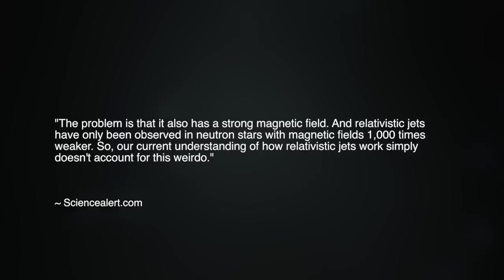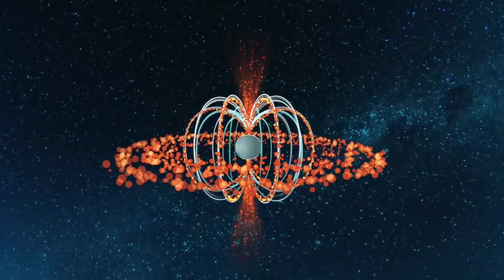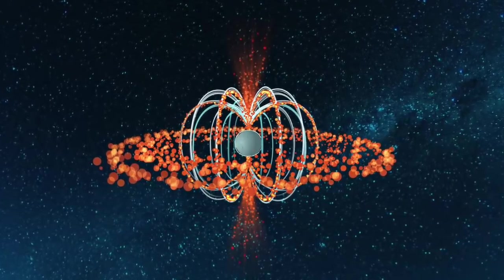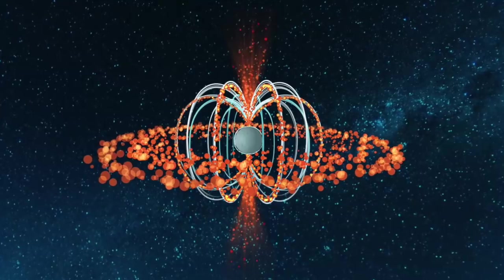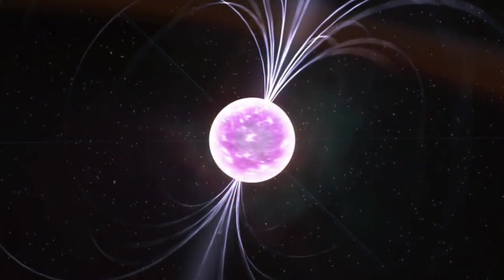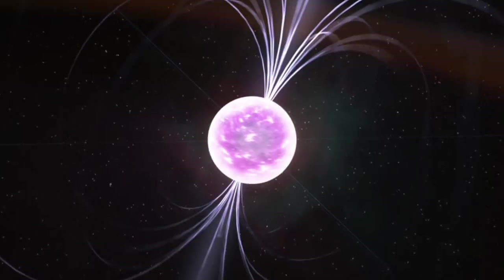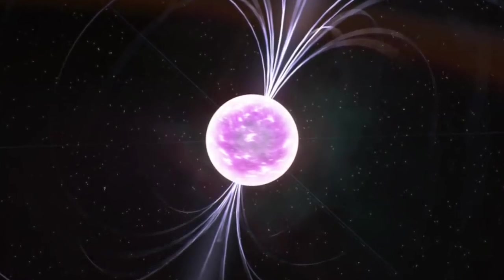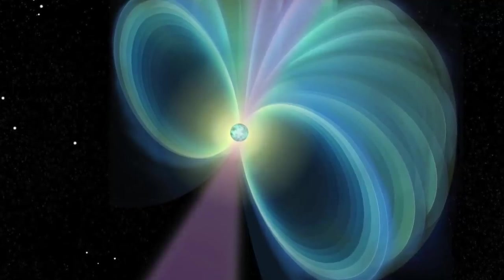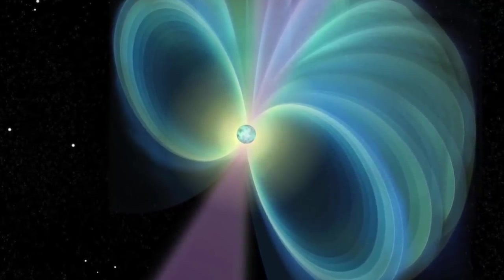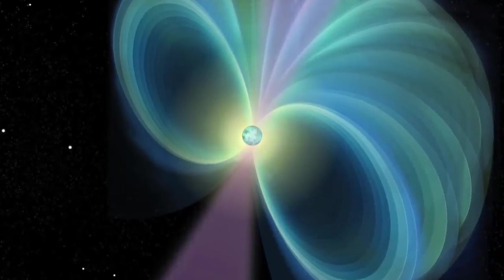The problem is that it also has a strong magnetic field. And relativistic jets have only been observed in neutron stars with magnetic fields 1,000 times weaker. So our current understanding of how relativistic jets work simply doesn't account for this weirdo. The neutron star has a magnetic field that scientists estimate to be 10 trillion times stronger than that of our Sun. Yet standard theory holds that such powerful magnetic fields in a neutron star would actually suppress the emission of relativistic jets. However, it appears that no number of neutron stars that shouldn't exist will actually persuade astrophysicists that they don't exist.